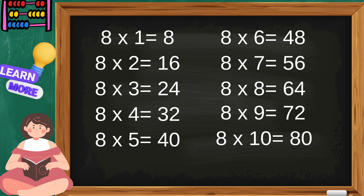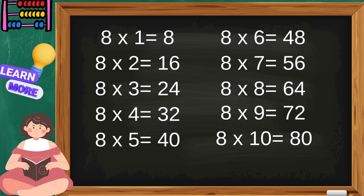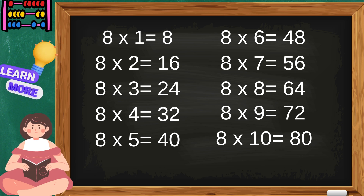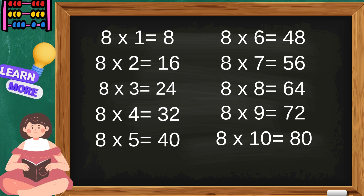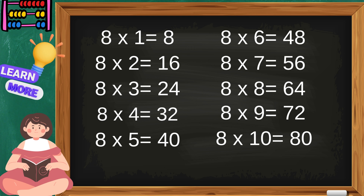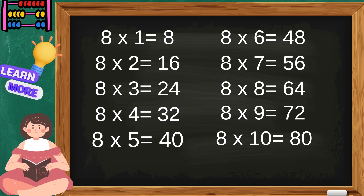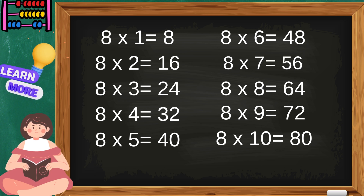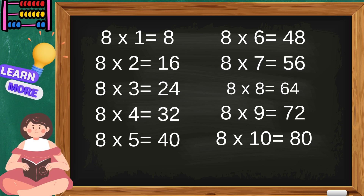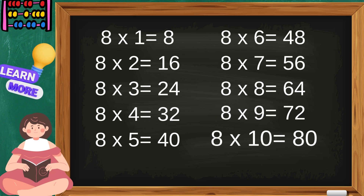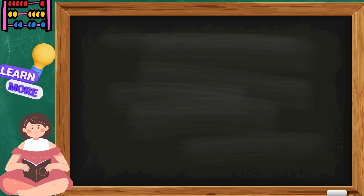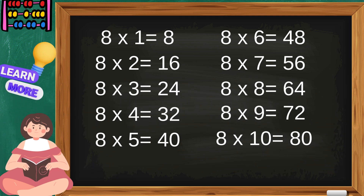Come on children, sing the table of eight with me. Eight ones are eight, eight twos are sixteen, eight threes are twenty-four, eight fours are thirty-two, eight fives are forty, eight sixes are forty-eight, eight sevens are fifty-six, eight eights are sixty-four, eight nines are seventy-two, eight tens are eighty. Children, now you know the table of eight.